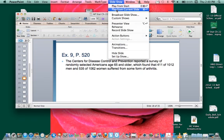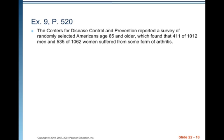Welcome back. This is chapter 22, video number 2. Let's look at exercise 9 from page 520. The Centers for Disease Control and Prevention reported a survey of randomly selected Americans aged 65 and older, which found that 411 of 1,012 men and 535 of 1,062 women suffered from some form of arthritis.